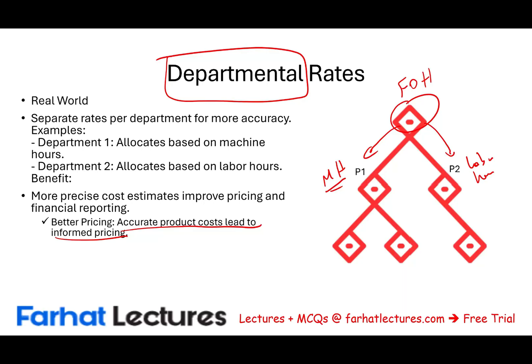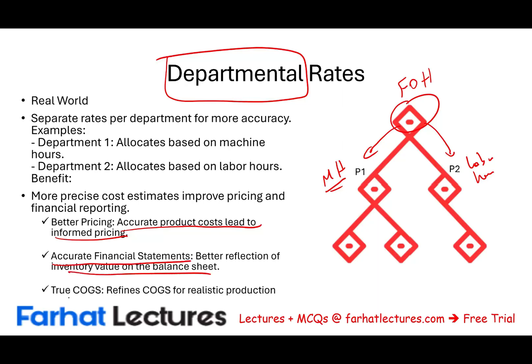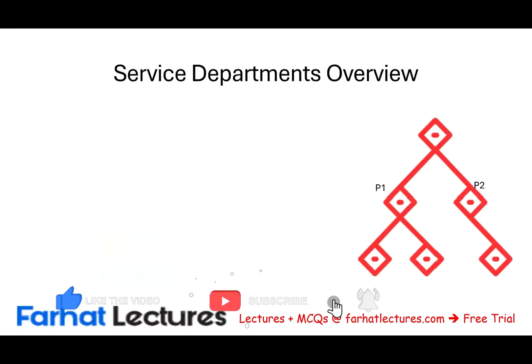You cannot misprice your product — over or under — because the competition will hurt you. If you underprice, you sell at a loss; if you overprice, your product won't sell. Also, using multiple department overhead costs produces better financial statements — a better reflection of inventory value on the balance sheet — and by extension, a more realistic cost of goods sold.